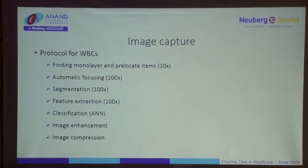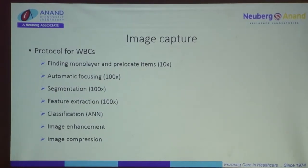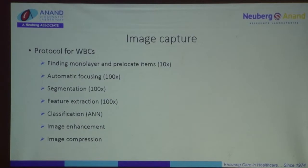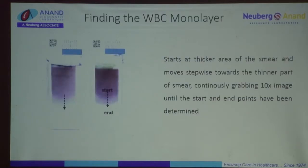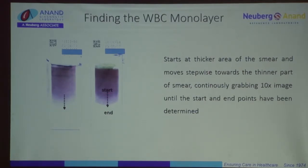When it captures images, there is a protocol for WBCs and a protocol for RBCs. It finds the optimal area of the smear — just as we do — goes to that area, does fine adjustment, focuses, and extracts features. For example, eosinophils have coarse orange granules, neutrophils have azurophilic granules, and basophils have basophilic granules — all those interpretational aspects come into play. It then classifies cells, similar to how we count on a DC counter or classify in our heads.